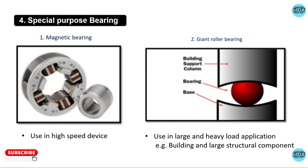Some special purpose bearings are magnetic bearings and gland roller bearings. Magnetic bearings are used in high speed devices and have no moving parts. Gland roller bearings are used in large and heavy load applications, such as in buildings, large structural components, and bridges.